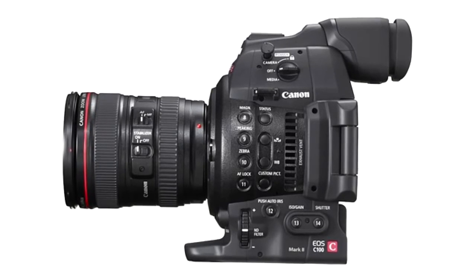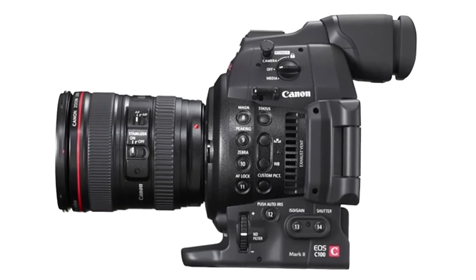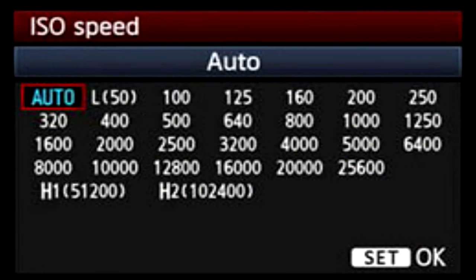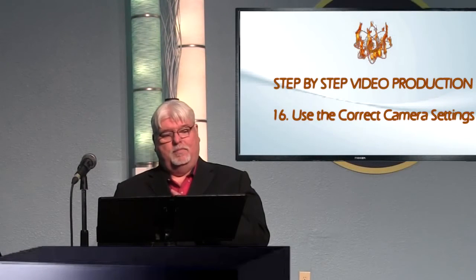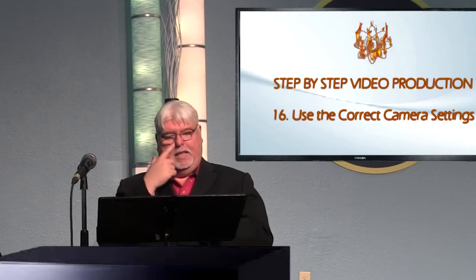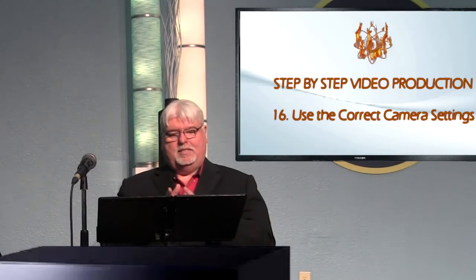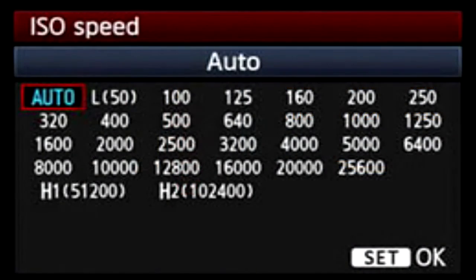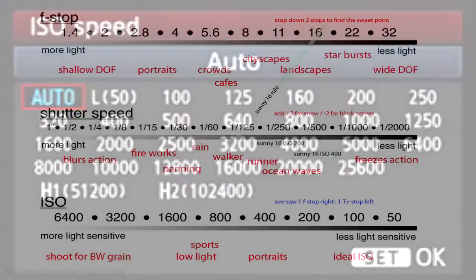Then you want to set your Canon, Nikon, Sony, or whatever camera you're shooting on to native ISO. Set your shutter speed for your standard — whether it's 1/50 for film or 1/60 for TV — and set your ISO to the native ISO for your camera, which is where it works best without generating a lot of noise in the picture.